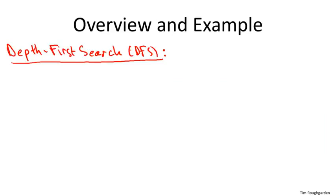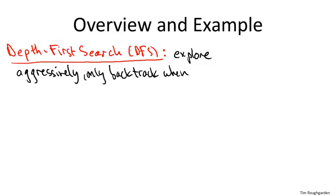If breadth-first search is the cautious and tentative exploration strategy, then depth-first search, or DFS for short, is its more aggressive cousin. The plan is to explore aggressively and only backtrack when necessary. This is very much the strategy one often uses when trying to solve a maze. To explain what I mean, let me show you how this would work in the same running example we used when we discussed breadth-first search.